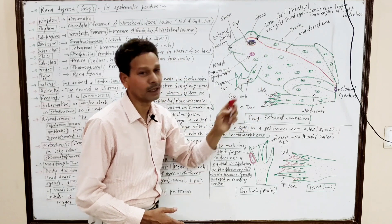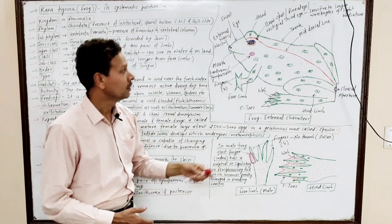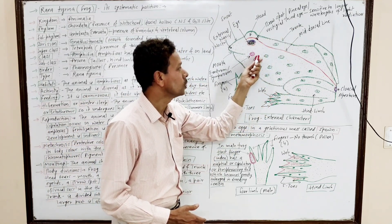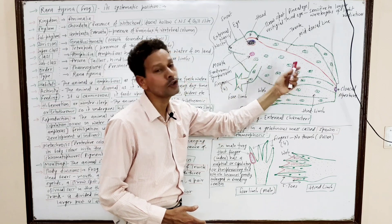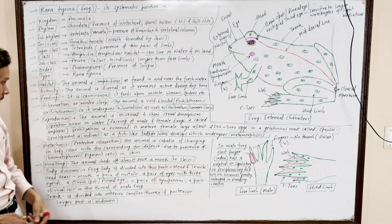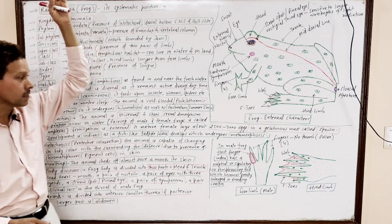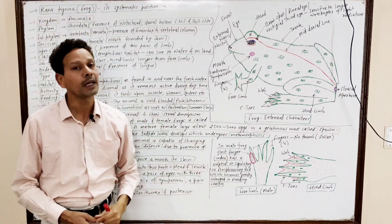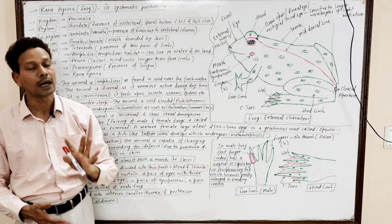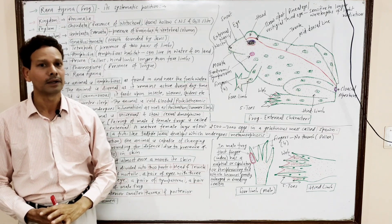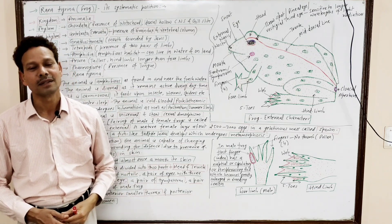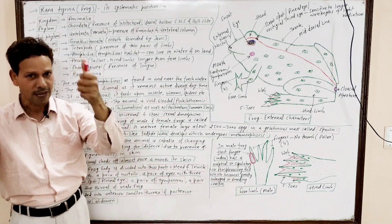This entire body region is the trunk — its anterior part is the thorax and the posterior part is the abdomen. This is all about the general introduction of frog Rana Tigrina. In the next lecture, we will discuss the skin of the frog. Thank you.